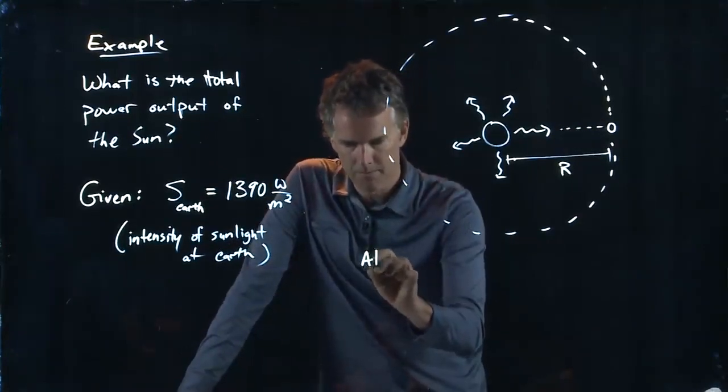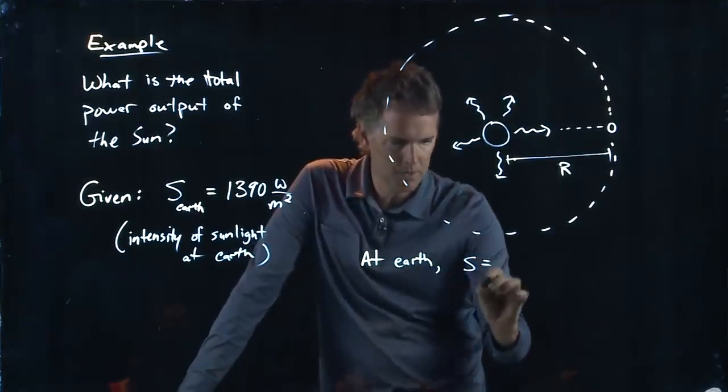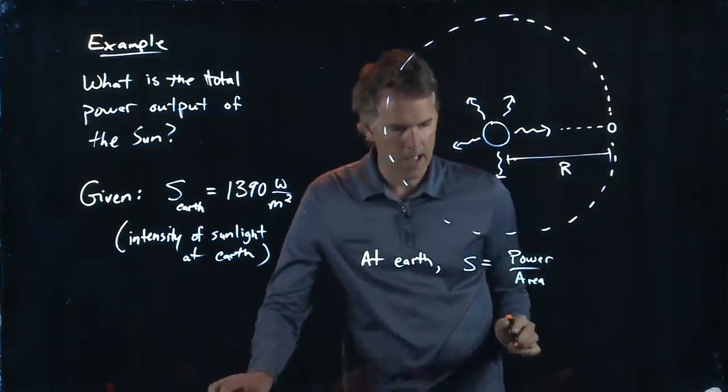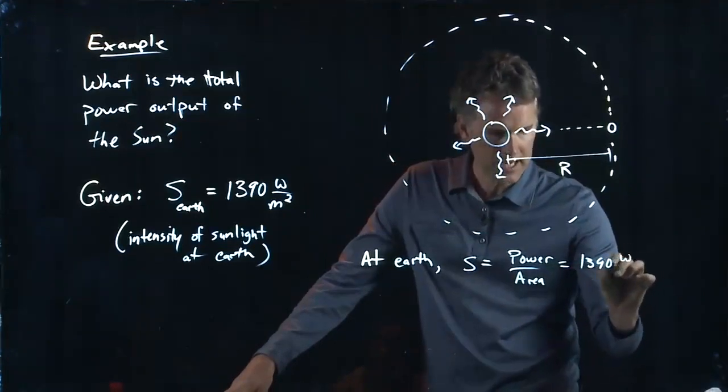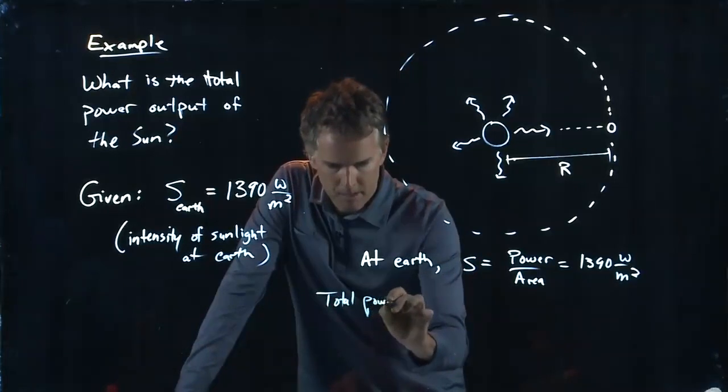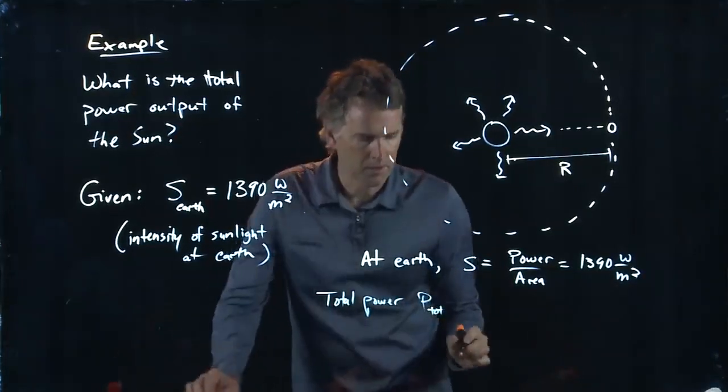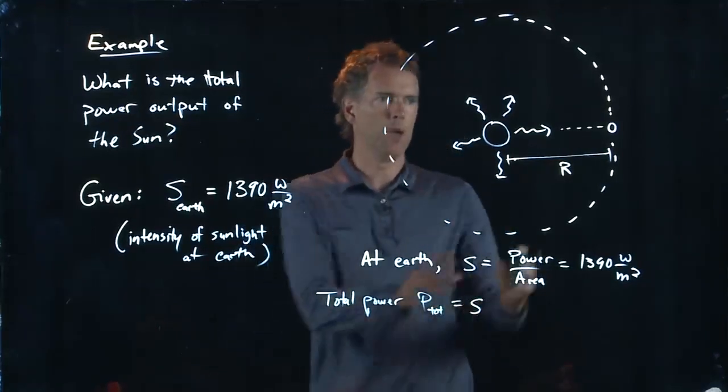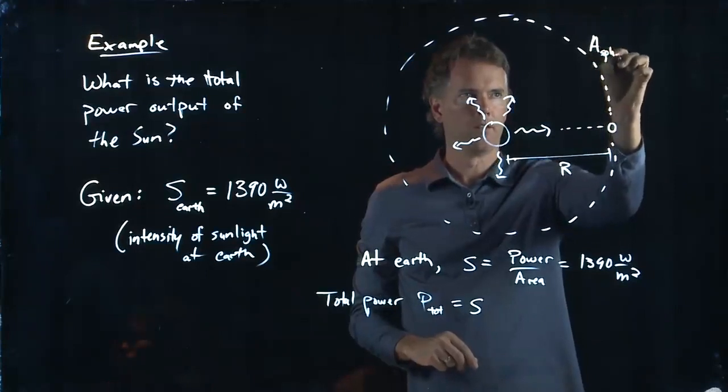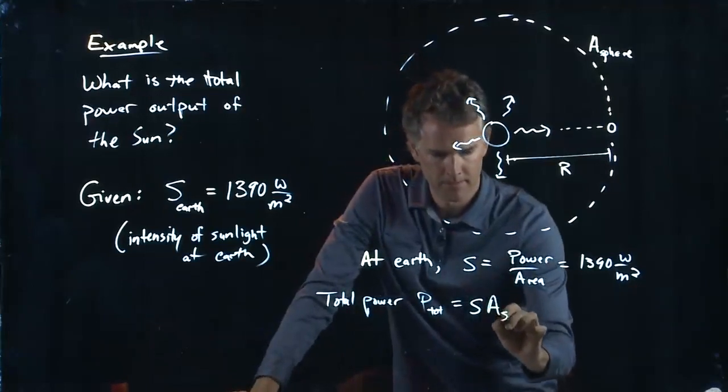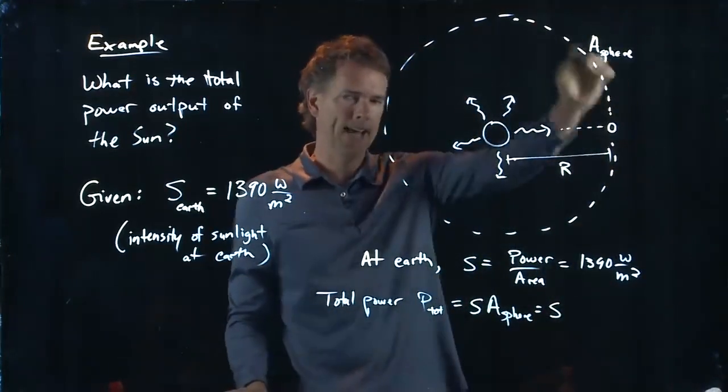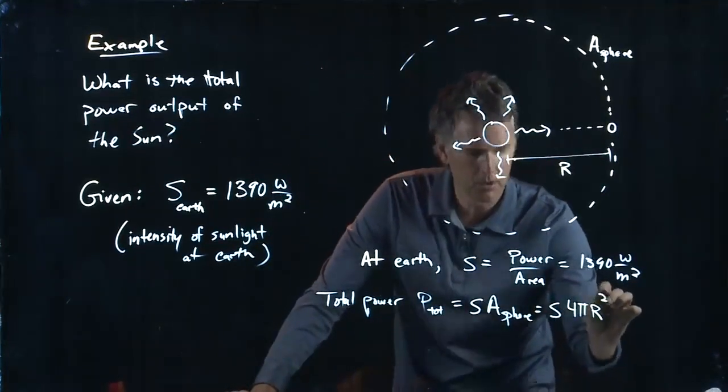Well, at the Earth, the intensity that we measure is just power over area. And that is what we said was 1390 watts per square meter. But the total power coming out of the sun is going to be that intensity that we measure here, multiplied by the area of this giant sphere. We know S. What is the area of this giant dashed sphere? It is 4 pi capital R squared.